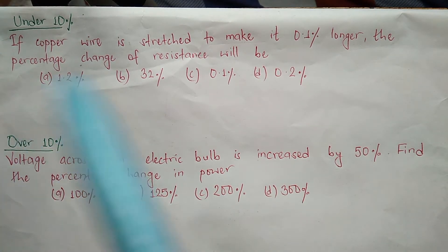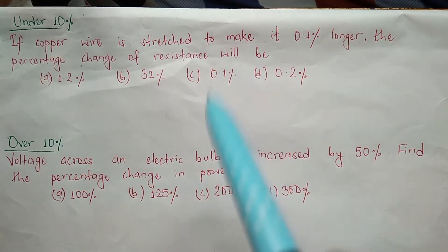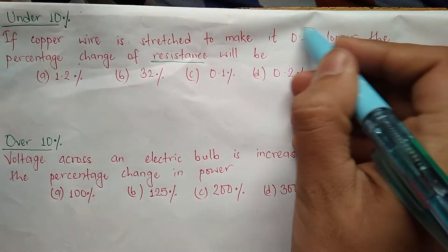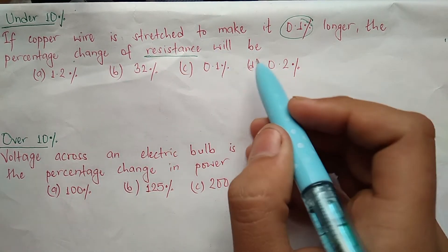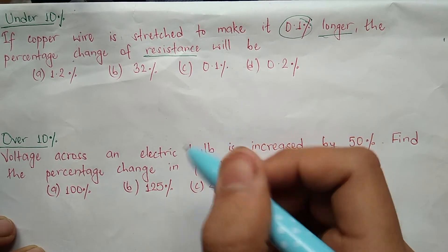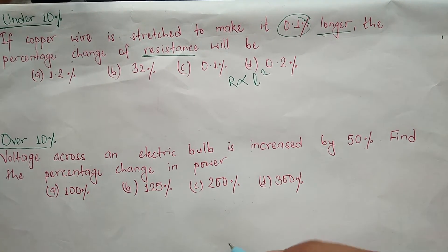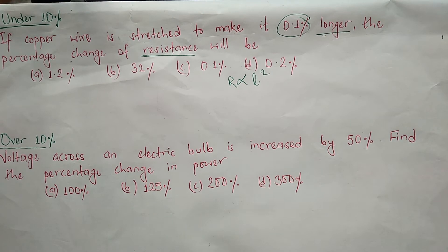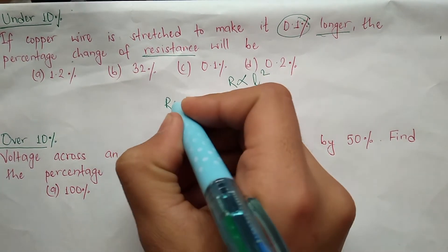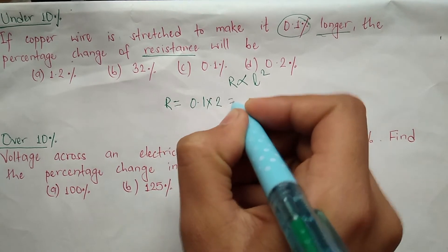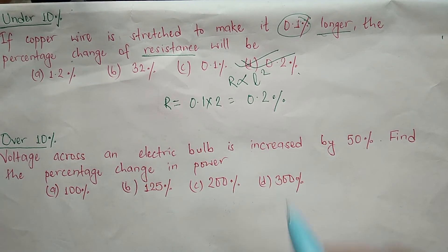First question is under 10%: if a copper wire is stressed to make it 0.1% longer, find the percentage change in resistance. The relation between resistance and length is R ∝ L². Since it is under 10%, the required answer is simply power times given percentage change: 2 × 0.1 = 0.2%. This is the answer.